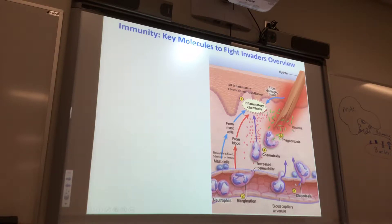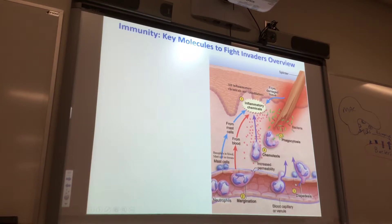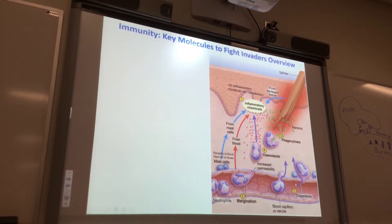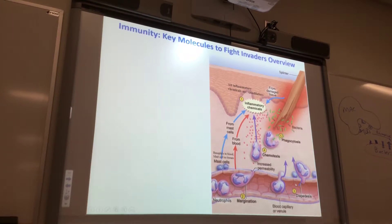They line the capillary. They're going to secrete molecules. These epithelial cells will secrete molecules that make leaky tight junctions between them so that the neutrophils can leave the bloodstream and get to the battlefield. So increased permeability of the capillary wall — that means the endothelial cells loosen up their tight junctions.